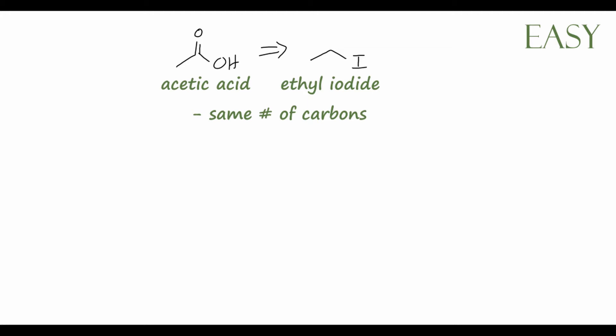Another thing we can notice is that we've also added oxygen to our starting material. We start with no oxygen and end up with two oxygen atoms in our product, which means that we have to undergo some sort of oxidation reaction. So this reaction is simplest to proceed backwards. Starting with our acetic acid, we know we have to undergo some oxidation — this is a carboxylic acid, and we can very easily oxidize something to a carboxylic acid.